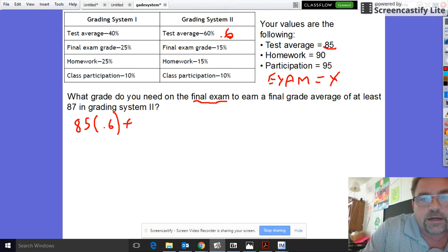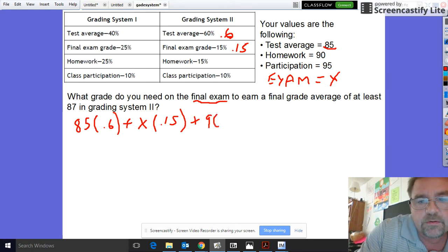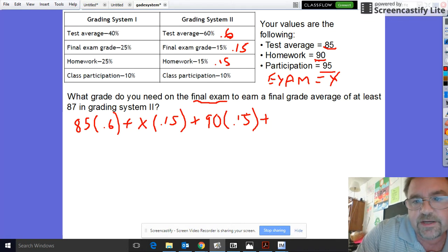Then you're going to add the next one which is the final exam, that's X times its percentage which is 0.15, plus the next one which is the homework. The 90 is the homework and it's 0.15 for the homework, so multiply it by 0.15.